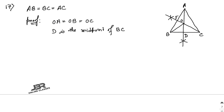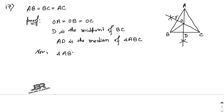Next, D is the midpoint of BC, so AD is the median of triangle ABC. Now in triangle ABD and triangle ACD: the first condition is AB equal to AC.